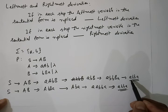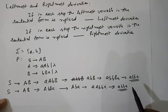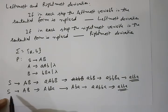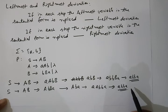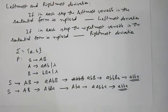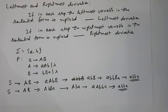The difference is: in leftmost derivation we always replace the leftmost variable by suitable production rules at every step; in rightmost derivation we always replace the rightmost symbol by suitable production rules at every step. An ambiguous grammar means that for a particular string more than one leftmost or rightmost derivation is possible. Before discussing ambiguous grammars, we will look at derivation trees or parse trees.